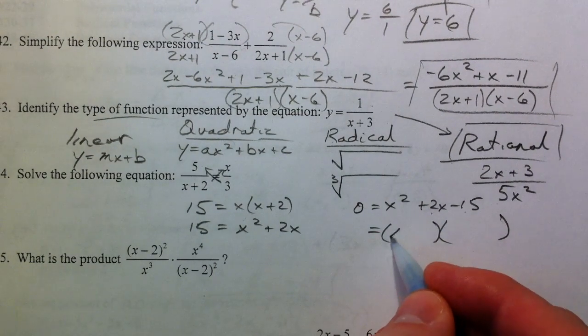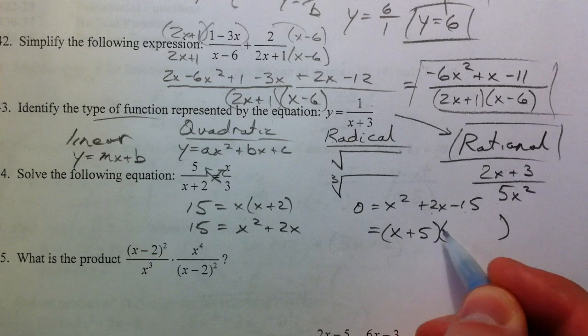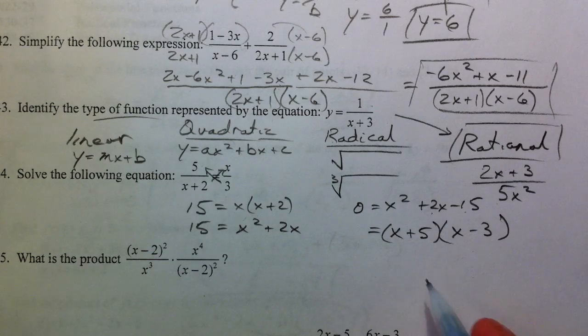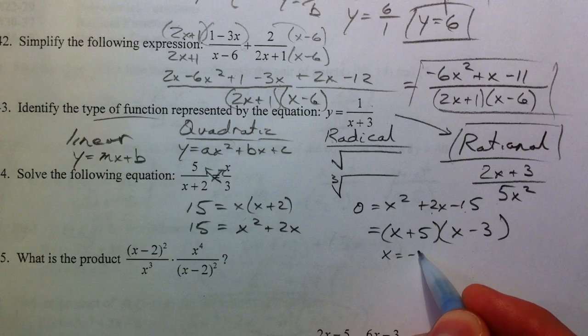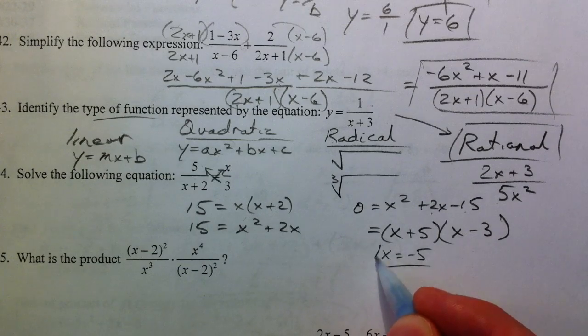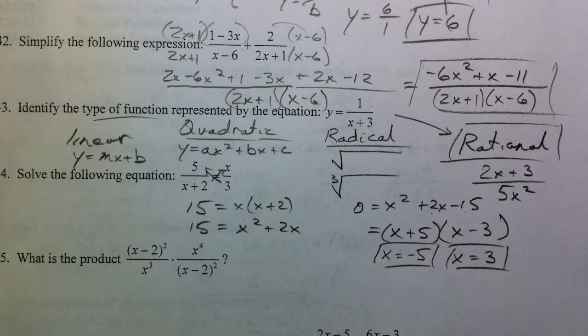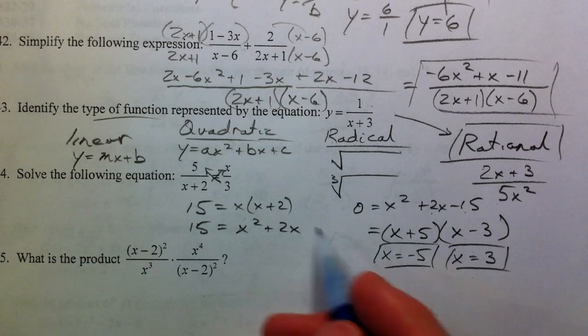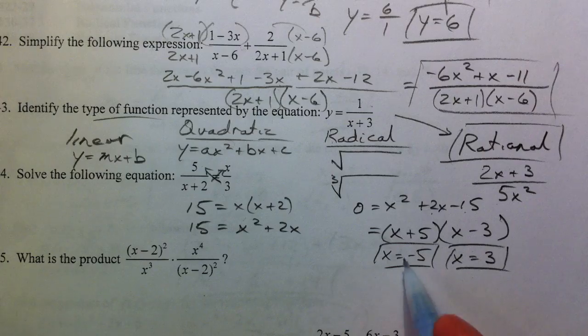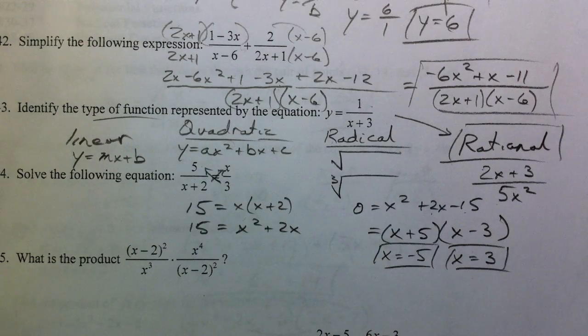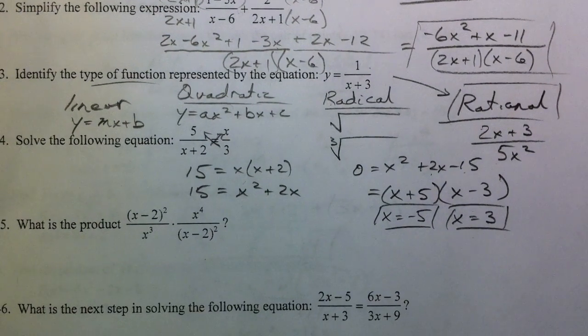Negative 15, X plus 5, X minus 3. And so X equals negative 5 and X equals positive 3. It's essential that when you're solving equations like this, you double check that neither of these numbers make your denominator 0.